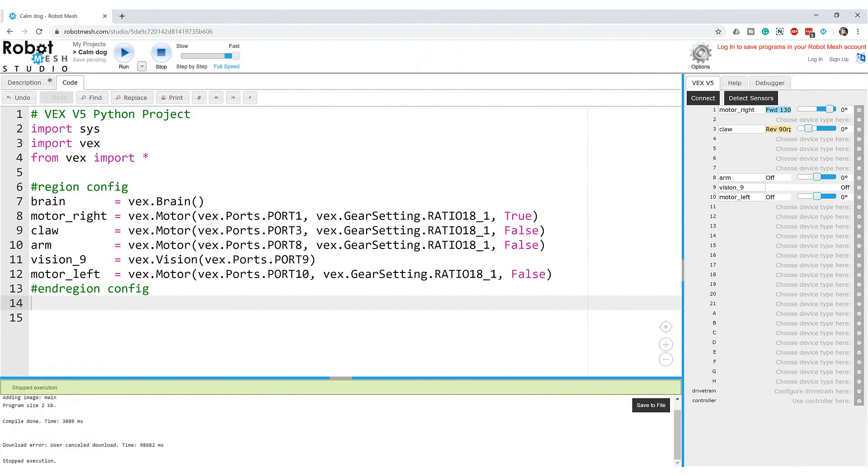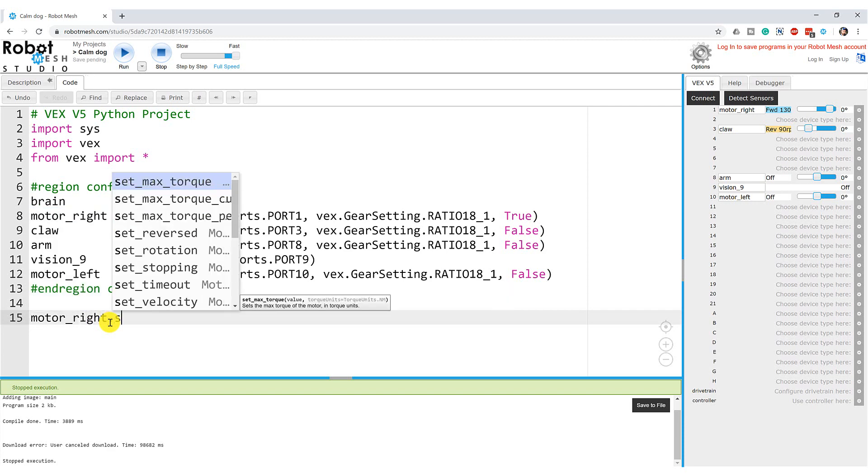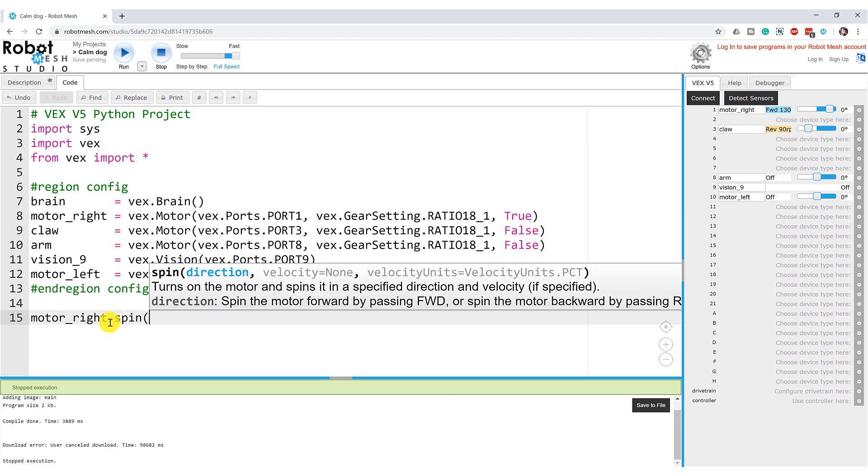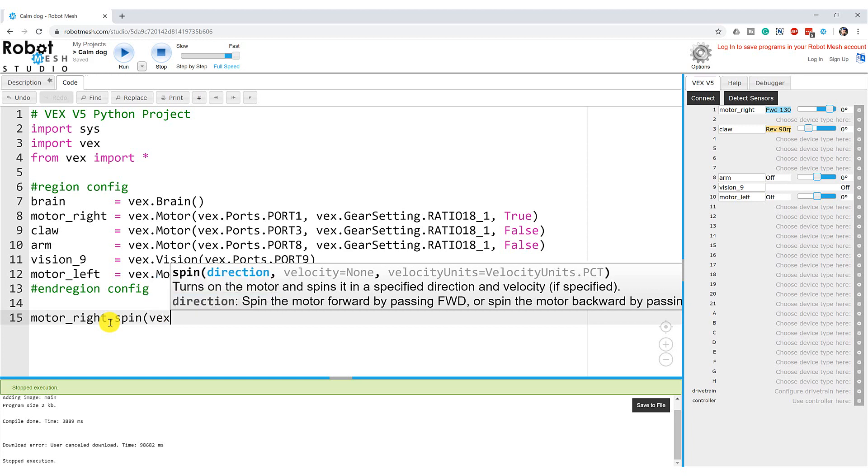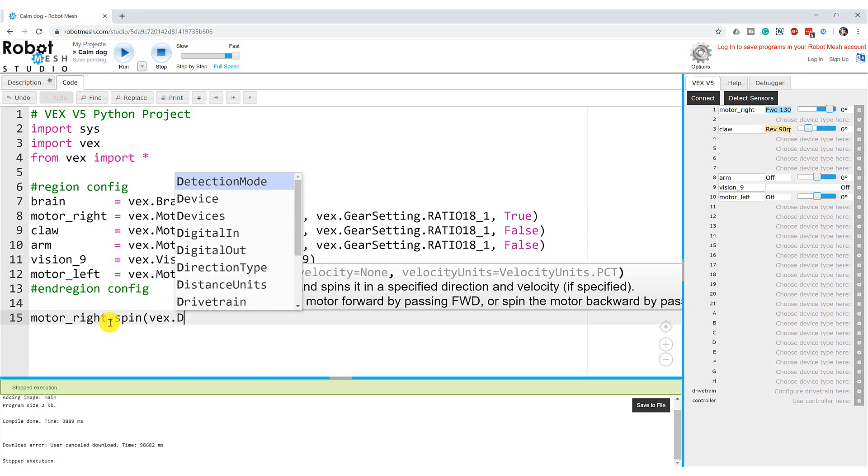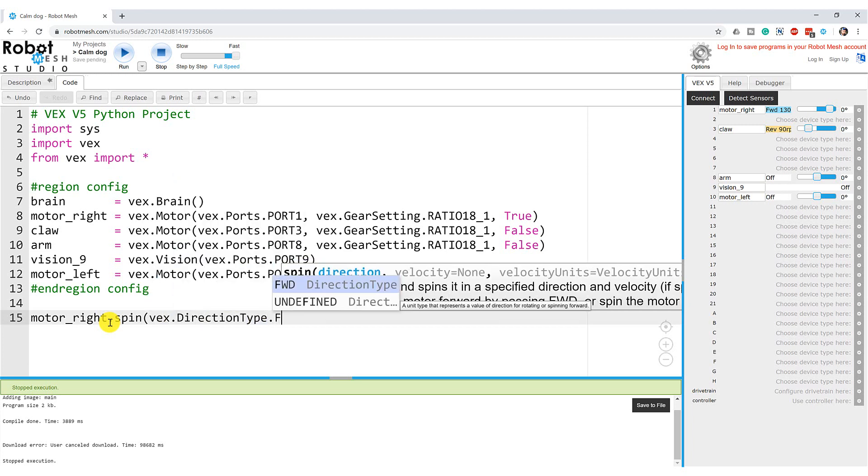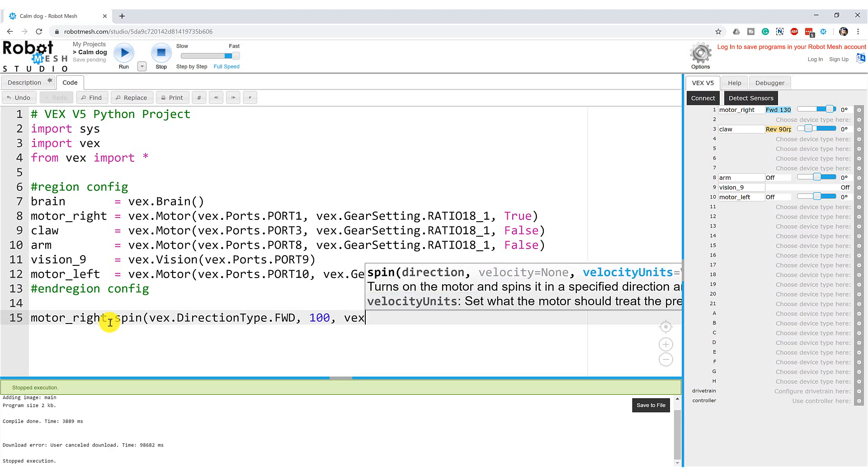So I'm here in Robot Mesh Studio and I'm going to write a simple Python program that's going to do nothing more than make my right motor spin. So let's type motor_right.spin and we're going to make the right motor spin forward. So we're going to go vex.directiontype.forward and let's make it spin at 100% of its power.